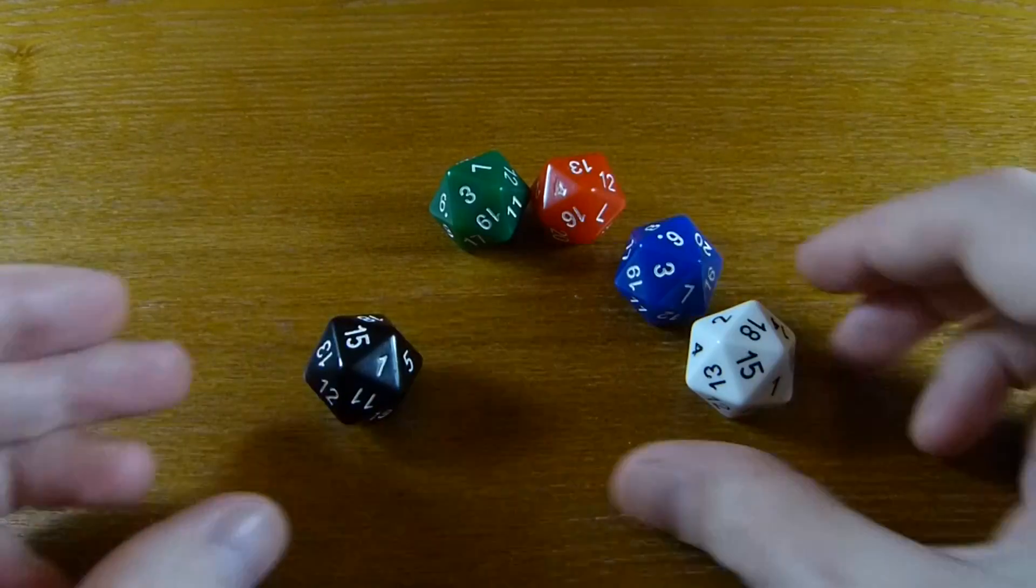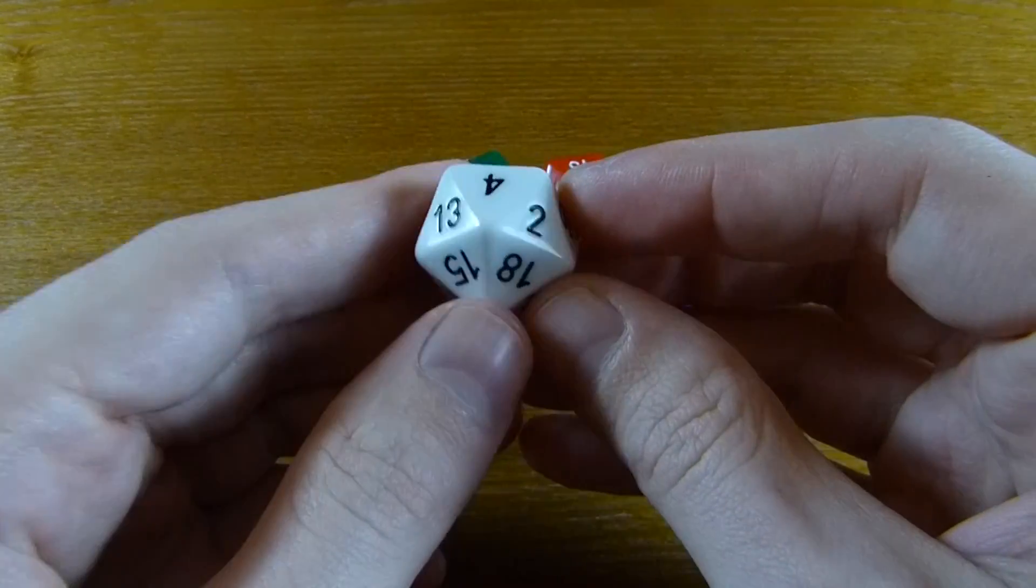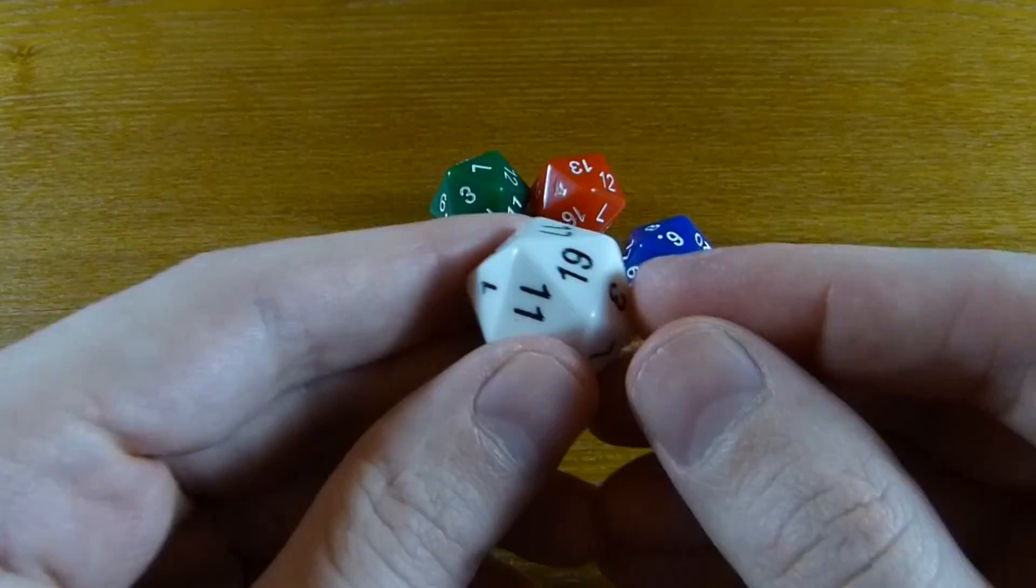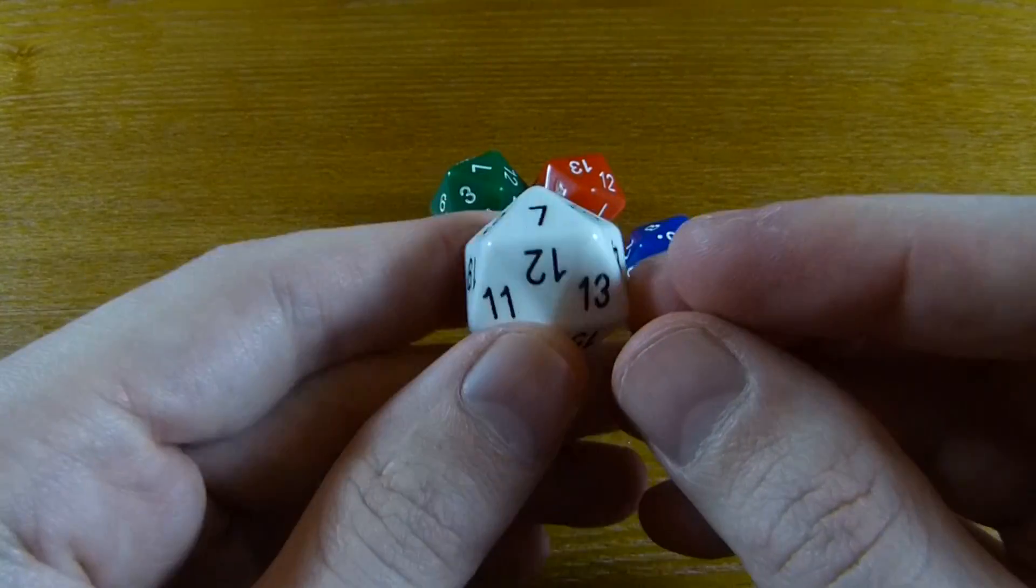These look and roll like ordinary 20-sided dice. The shape is a regular icosahedron, so what's special about these is the choice of where the numbers go.